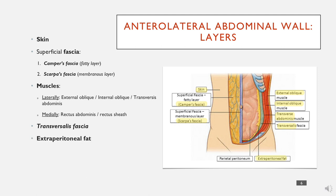Underneath that we have some fat that is outside of the peritoneum but still within the abdominal cavity. That is lined by parietal peritoneum, and we also have visceral peritoneum just on top of the viscera.